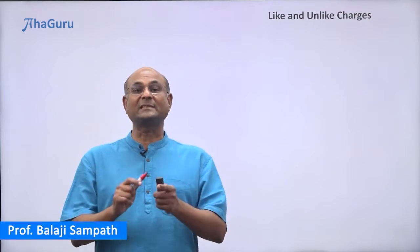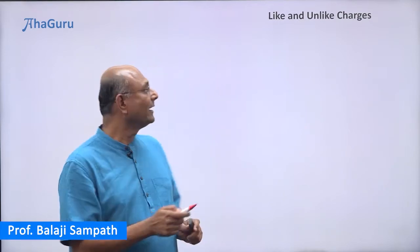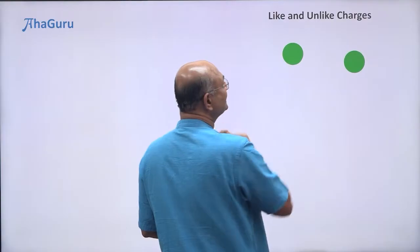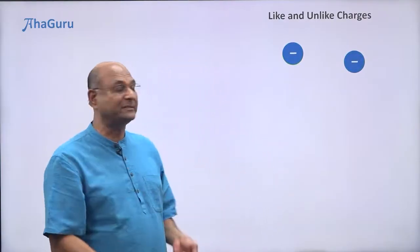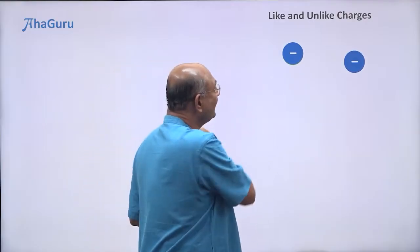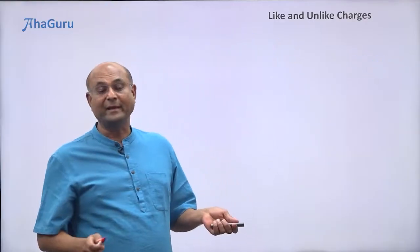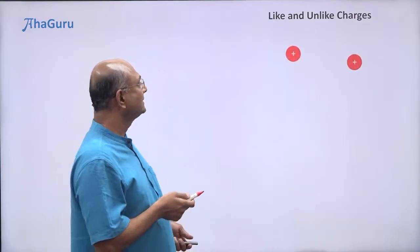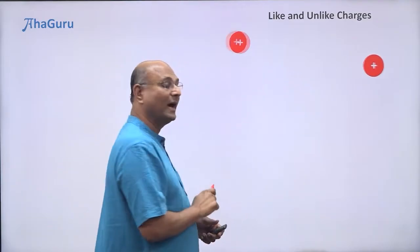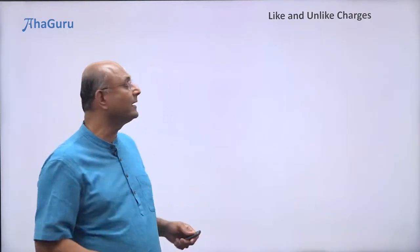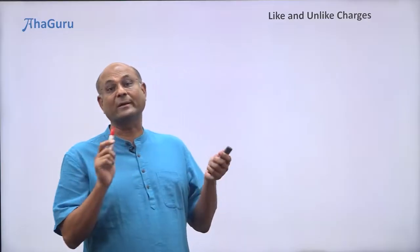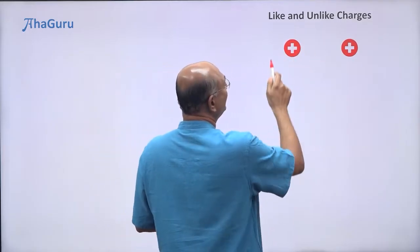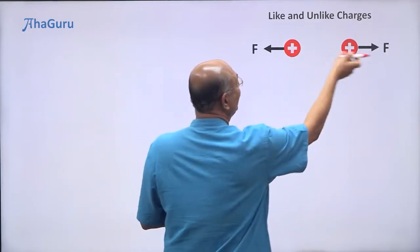Let us look at the forces that charges exert on each other. I have two objects here. If I charge them with the same kind of charge — negative charge in this case — they are going to fly away. So that tells you negative charges are repelling each other. Same way, if I have two positive charges, again these charges will fly away. So positive charges also repel each other, and a positive charge and a positive charge exert forces pushing away from each other.